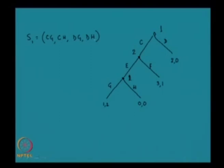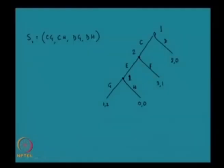DG means that at the first stage, player one takes action D, and specifies that if the history is CE — which is ruled out by his own action D — he would take action G. Likewise DH. These are the four strategies of player one. Player two's strategy set consists of only two elements: E or F, since he gets to move only after the history C.